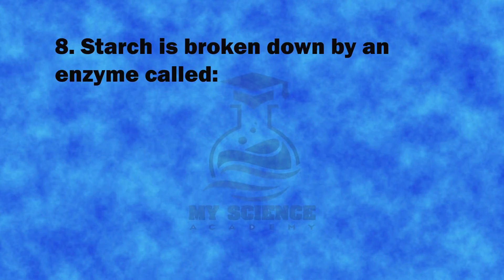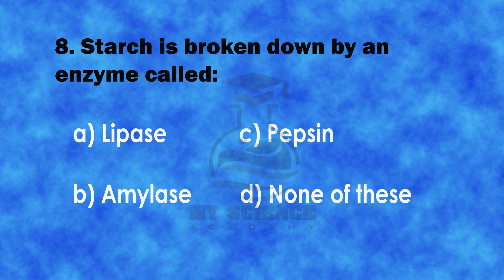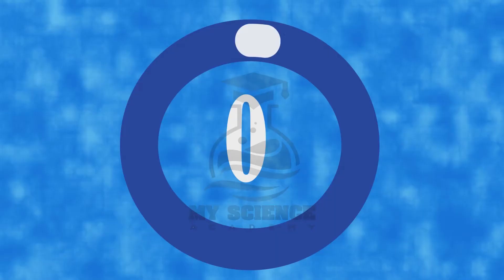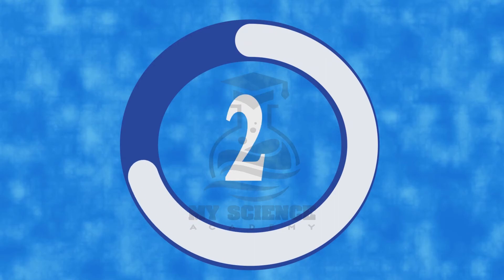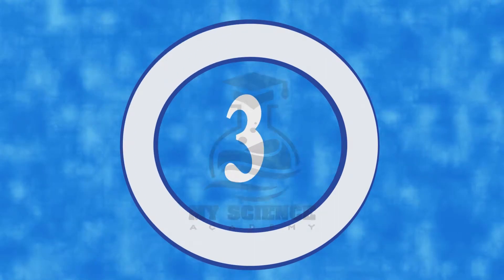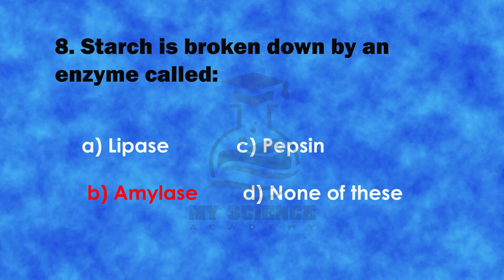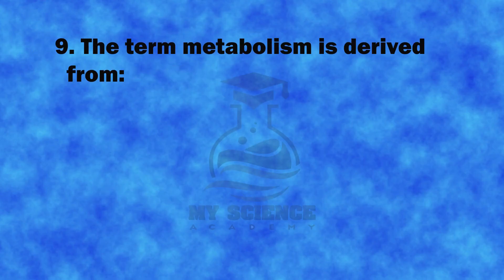Question 8: Starch is broken down by an enzyme called: A. Lipase, B. Amylase, C. Pepsin, or D. None of these. The correct answer is B. Amylase.